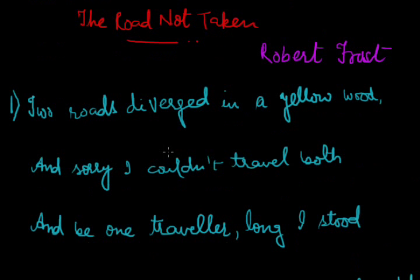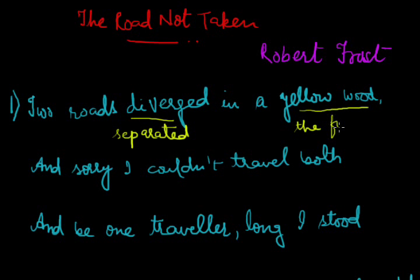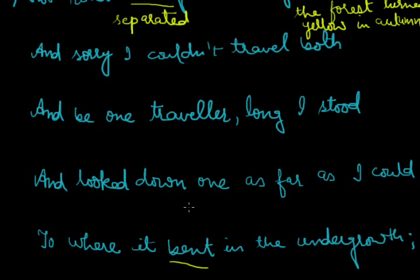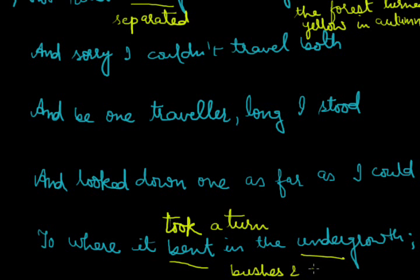'Diverged' means separated. 'Yellow wood' — the forest turned yellow in autumn. 'Bent' means took a turn. 'Undergrowth' means bushes and low trees. 'Yellow wood' means leaves turned yellow due to season. 'Longer stood' means the poet is in indecision and confusion.